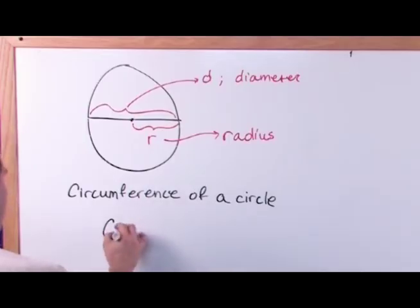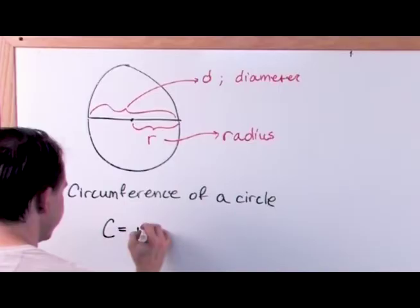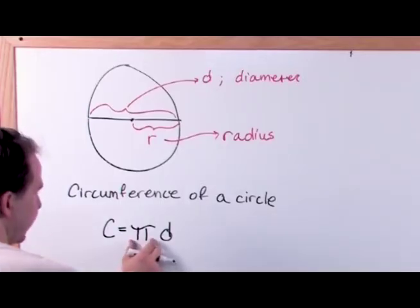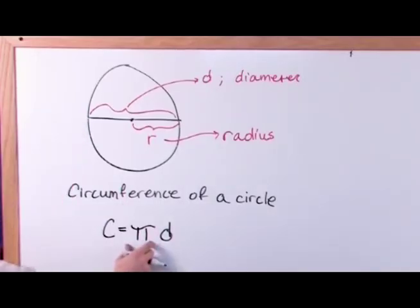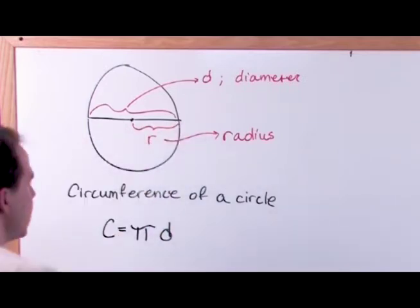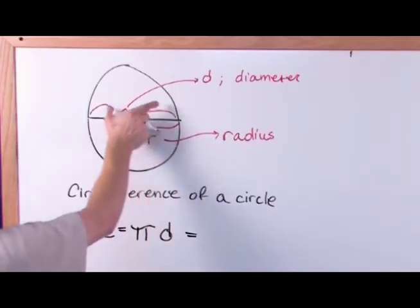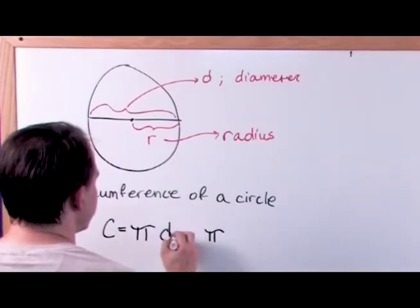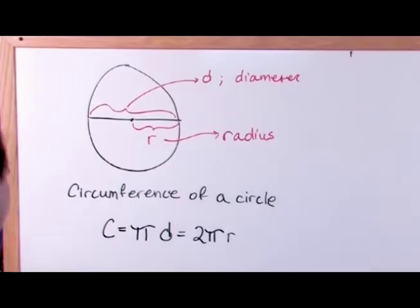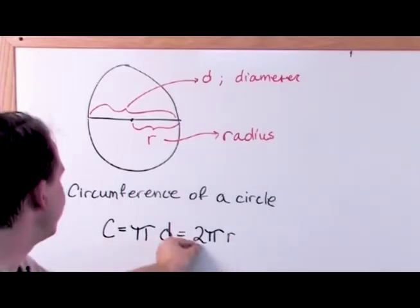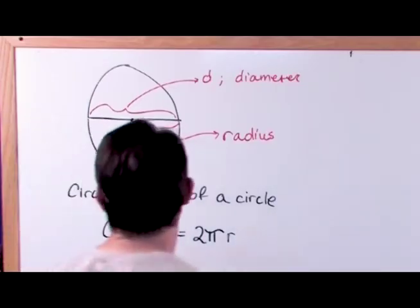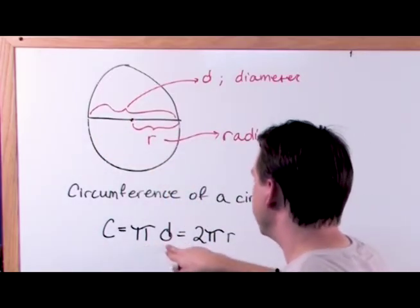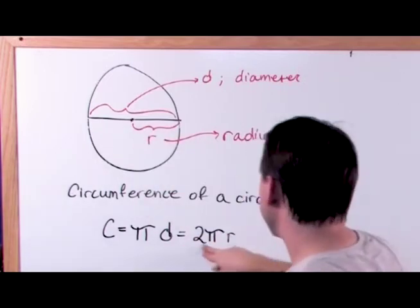The circumference of any circle is equal to something called pi times the diameter of the circle. That's why the diameter is so incredibly important. Now because the radius is one-half the diameter, you can also say that the circumference is equal to two times pi times r. So these are two different ways of saying the same thing: pi times d, or two pi r. Because two r's — r here and r here — two times r is equal to the diameter. So because it's pi times d, if you replace d with two times r, you get the other formula, two pi r.